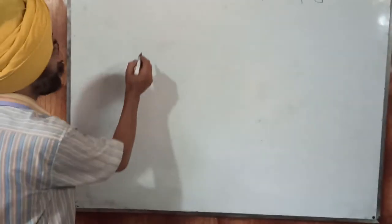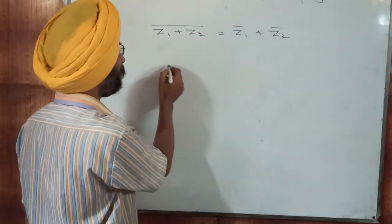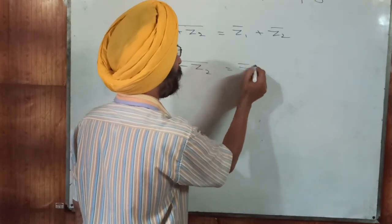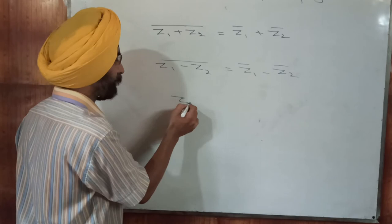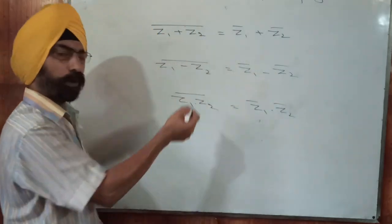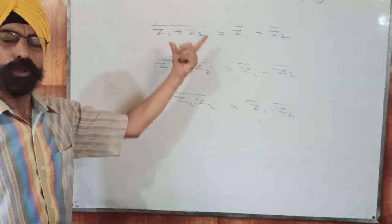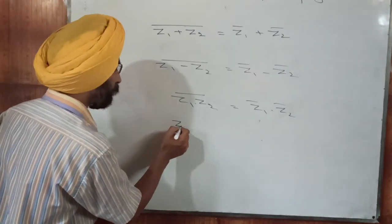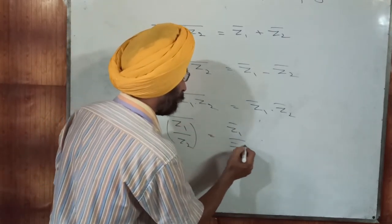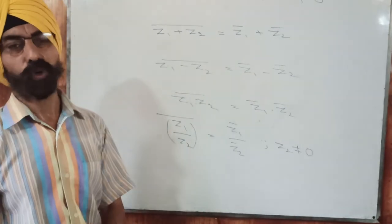There are several other properties of conjugate. The conjugate of Z1 plus Z2 is Z1 bar plus Z2 bar. The conjugate of Z1 minus Z2 is Z1 bar minus Z2 bar. The conjugate of Z1 times Z2 is Z1 bar times Z2 bar. These can be verified by taking Z1 equal to A plus iota B and Z2 equal to C plus iota D. The fourth property is that the conjugate of Z1 upon Z2 equals Z1 bar upon Z2 bar, provided Z2 is non-zero.